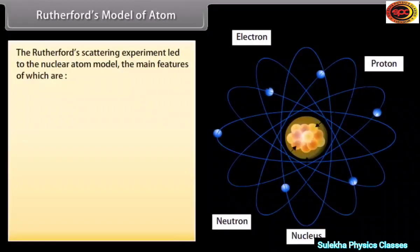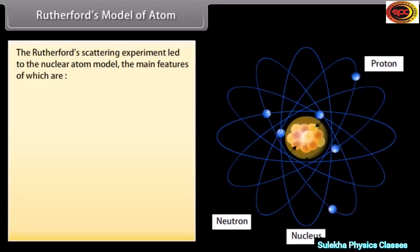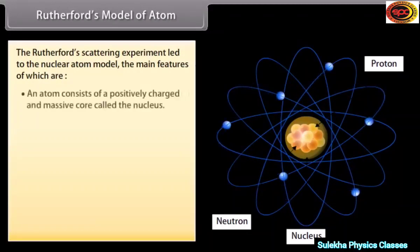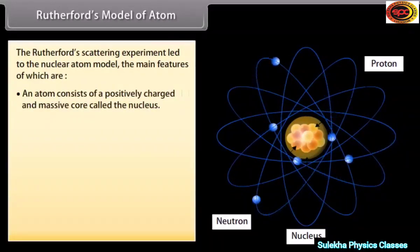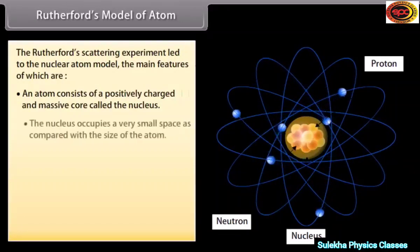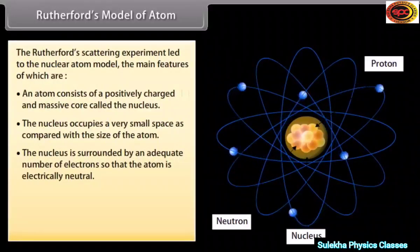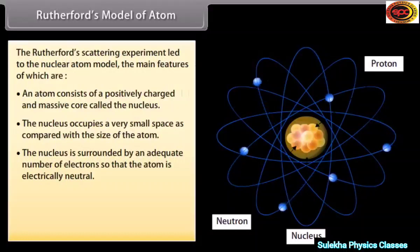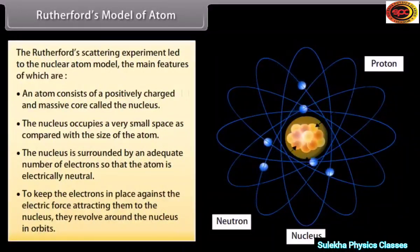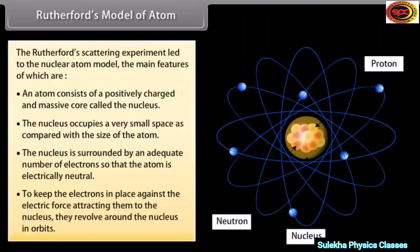Rutherford's model of atom: The Rutherford scattering experiment led to the nuclear atom model. An atom consists of a positively charged and massive core called the nucleus. The nucleus occupies a very small space compared with the size of the atom. The nucleus is surrounded by an adequate number of electrons so that the atom is electrically neutral. To keep the electrons in place against the electric force attracting them to the nucleus, they revolve around the nucleus in orbits.